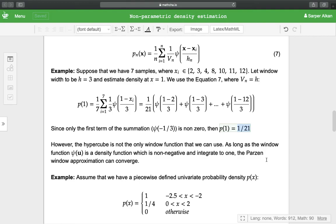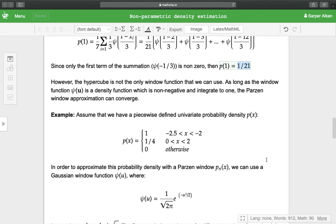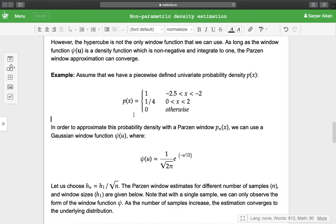However, the hypercube is not the only window function that we can use. As long as the window function φ(u) is a density function, which means it is non-negative and it integrates to 1, the Parzen window approximation can converge. So when we are given such a function, such a probability density, suppose that we don't know this probability density function and we are trying to approximate this function.